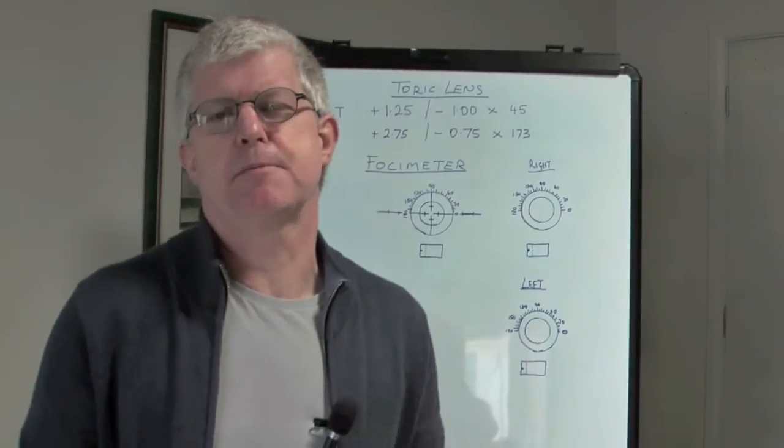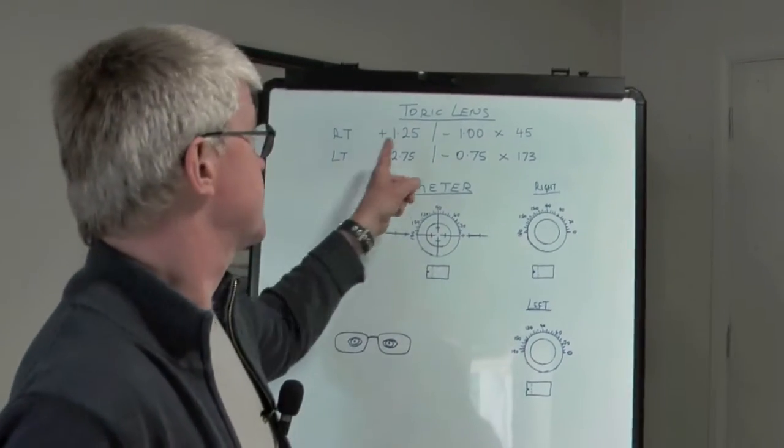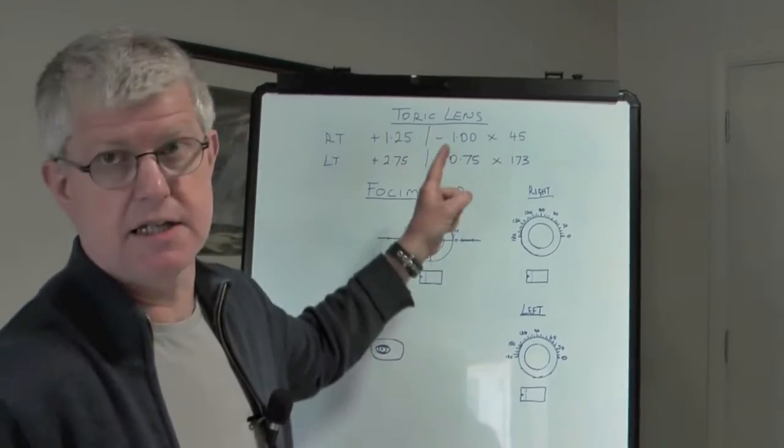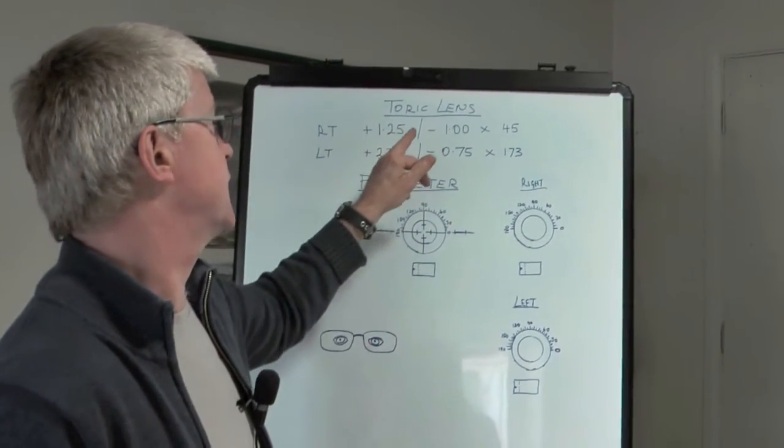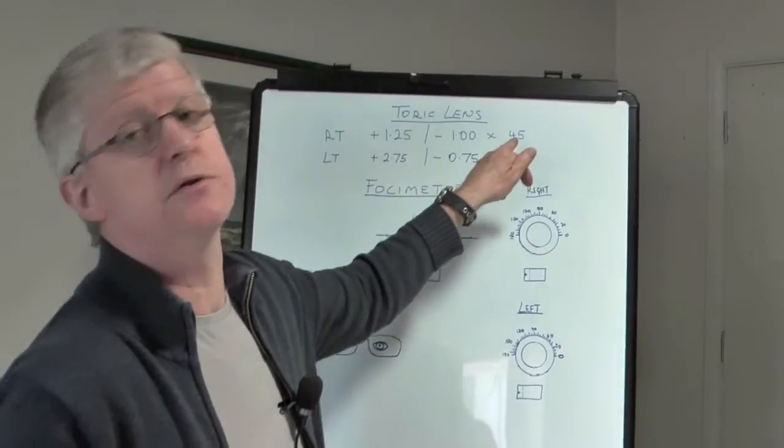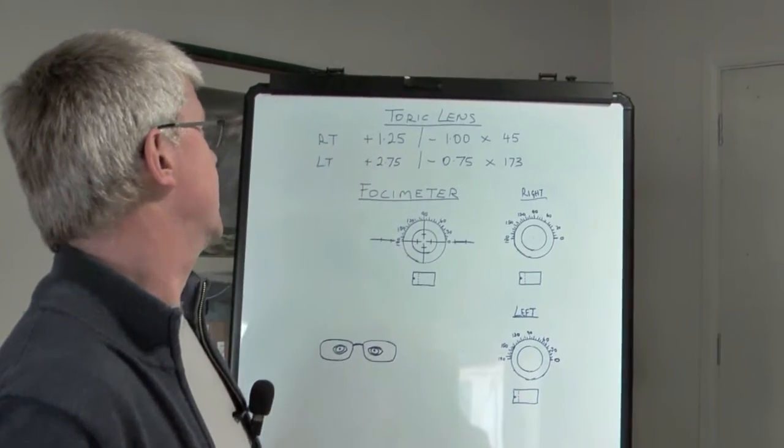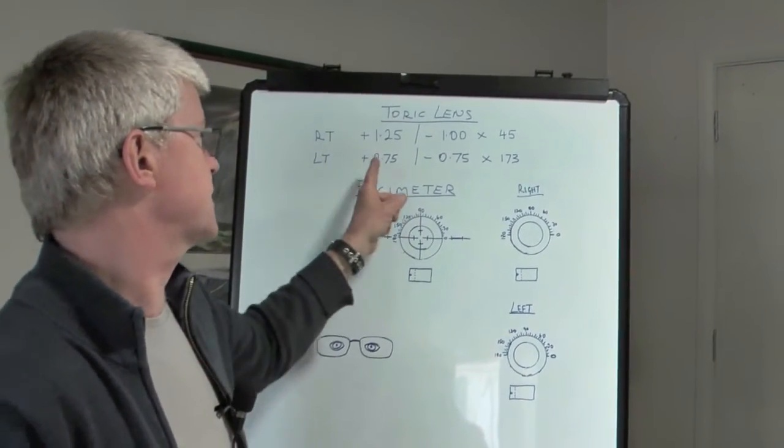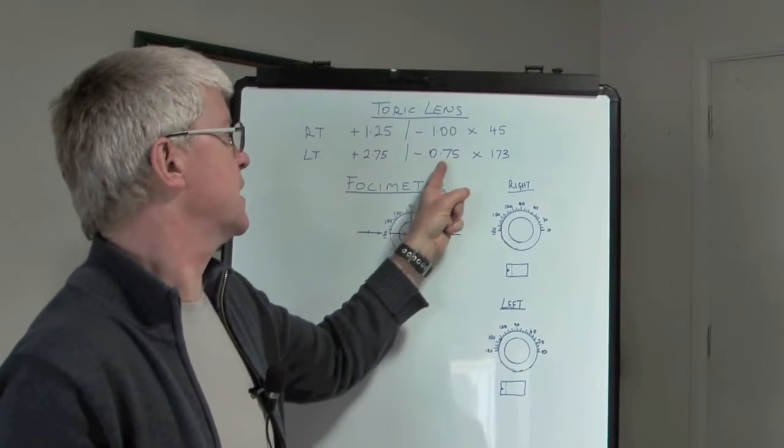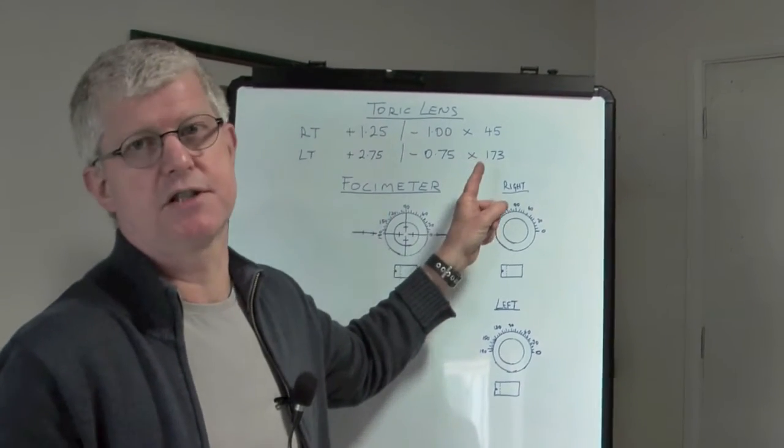Let's say we're going to make up a pair of glasses to this prescription. It's a toric lens, plus 1.25 minus 1, axis 45 in the right eye, and in the left eye it's plus 2.75 minus 0.75, axis 173.